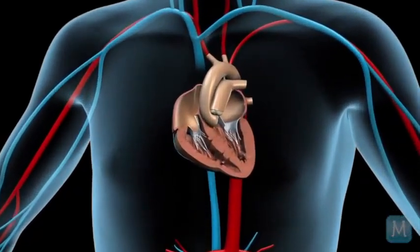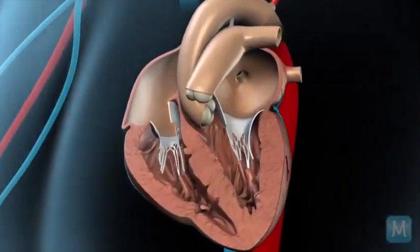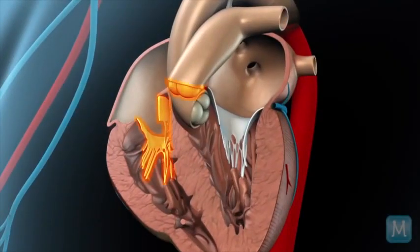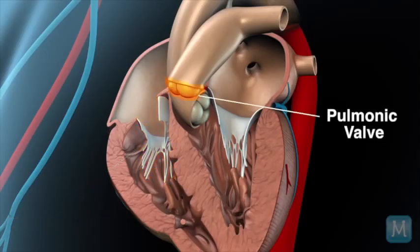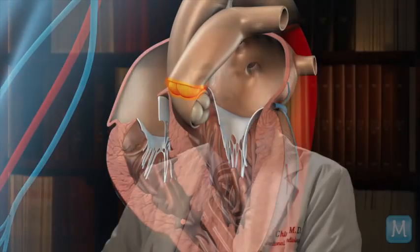There are four valves inside the heart — two valves on the right side and two valves on the left side. The two valves on the right side, called the tricuspid valve and the pulmonic valve, are not usually involved in adult heart disease. Sometimes babies have diseases related to the right-side valves, but generally adults do not have too many problems with the tricuspid or pulmonic valves.